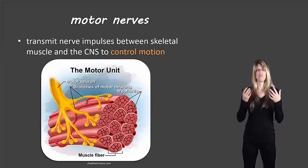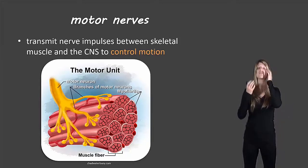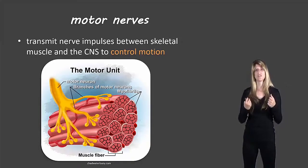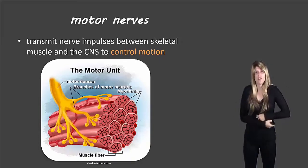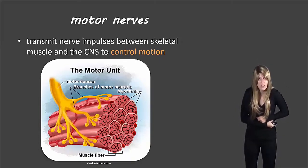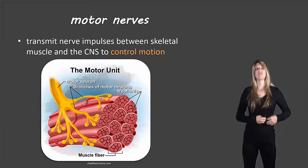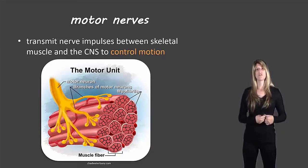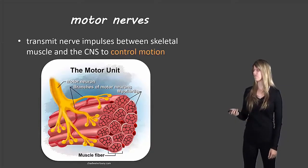The motor nerves are sending those messages to your arms and body to do that — to hunch over like that — so it's the motor nerves that are carrying out that action.